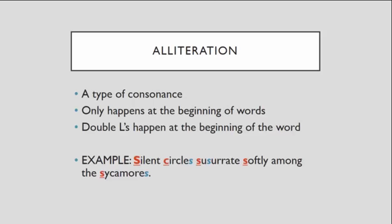The last one is the one most of you are probably familiar with: alliteration. Alliteration is actually a type of consonance. Assonance and consonance are the two big umbrella categories, and alliteration is a little more specific. It's specific because alliteration involves sounds that happen at the beginning of words. A trick for remembering this is the double L's in 'alliteration' — they help you remember it happens at the beginning.